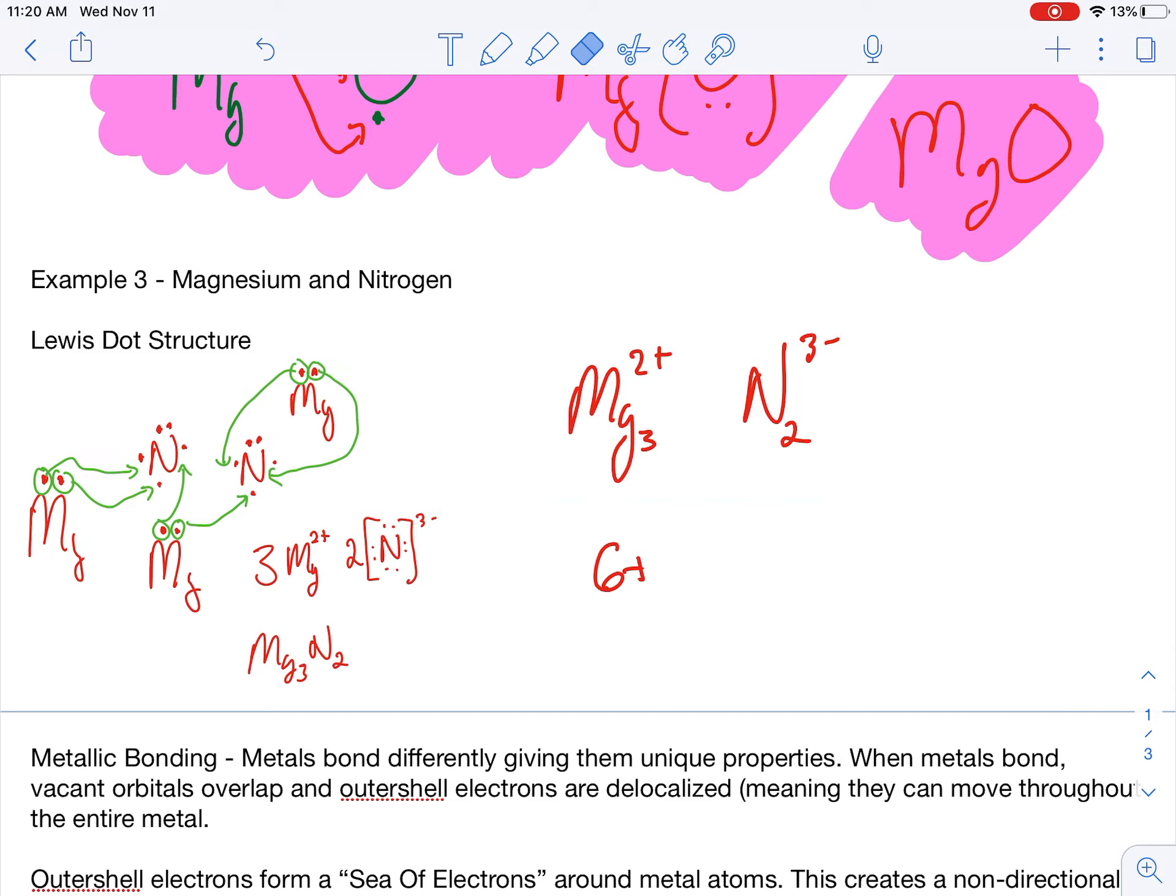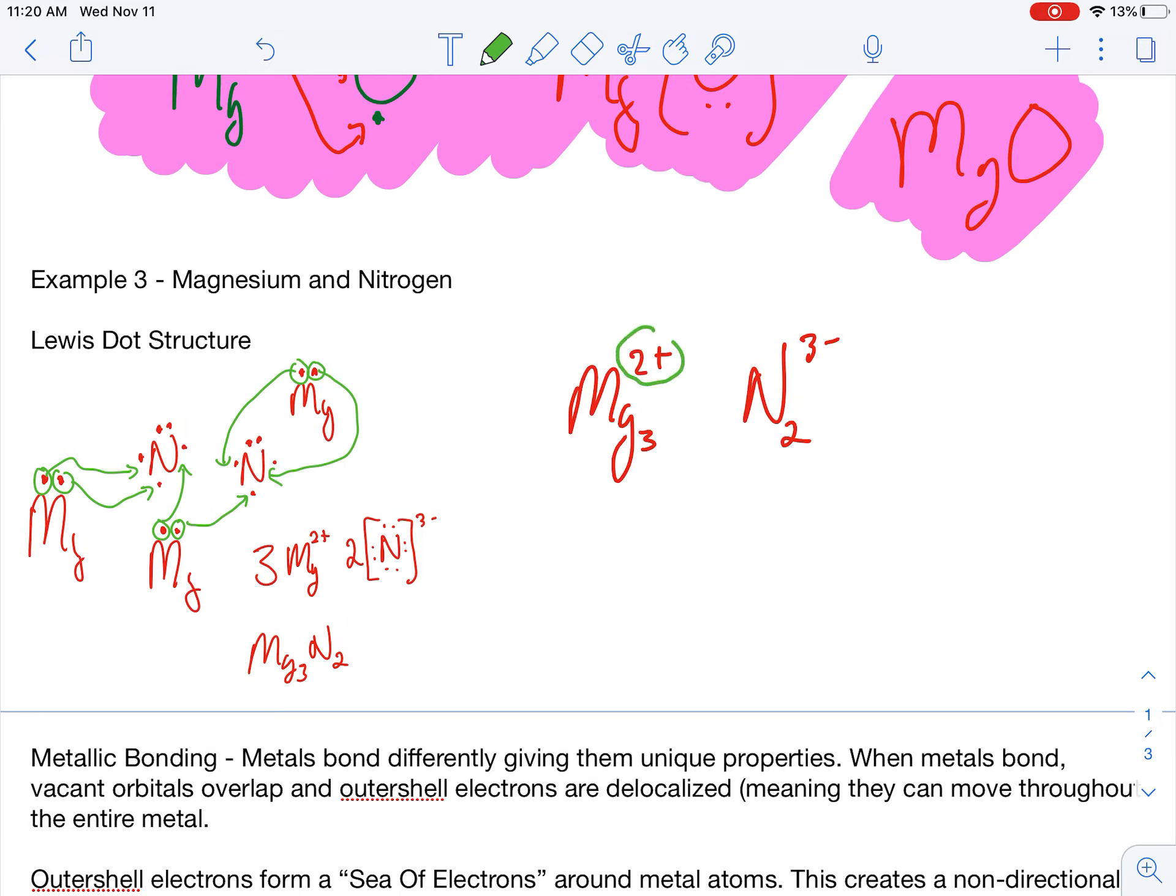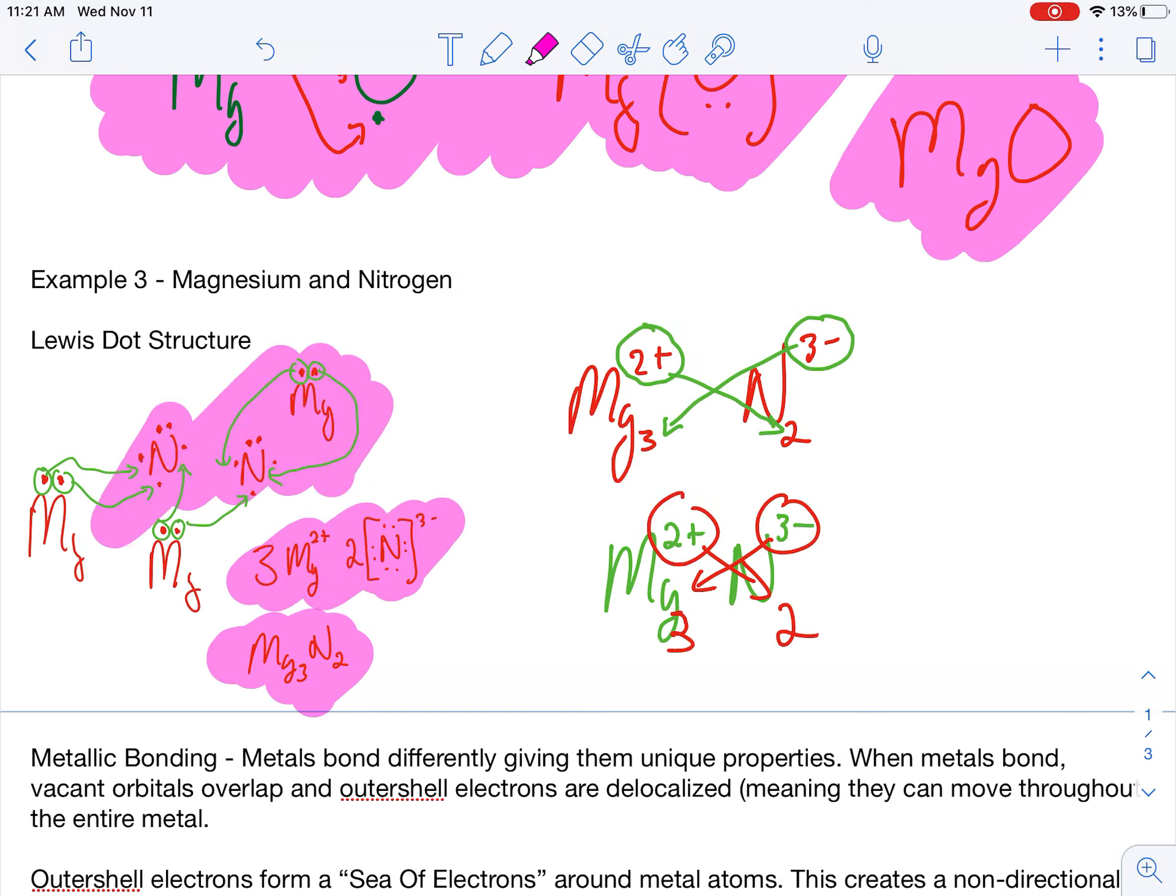Or there's something called the cross and drop method. The cross and drop method takes your charge of the cation and makes that into the subscript of the anion. And then it takes the charge of the anion and makes that into the subscript of your cation. So, if I only knew Mg2+ and N3-, I could still get their subscripts, a three and a two, using that drop and cross method. That gives me the right answer of Mg3N2 for the formula unit, and I could kind of work backwards to get all of this information using that method. Realize again that everything in pink is required for a Lewis dot structure.